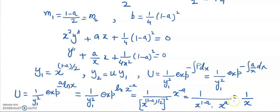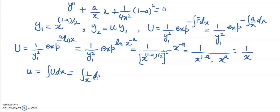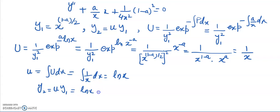Since small u = ∫U dx = ∫(1/x) dx = ln(x). Therefore the second solution is u·y₁ = ln(x) · x^((1−a)/2). Writing m = (1−a)/2, the second solution is ln(x) · x^m.